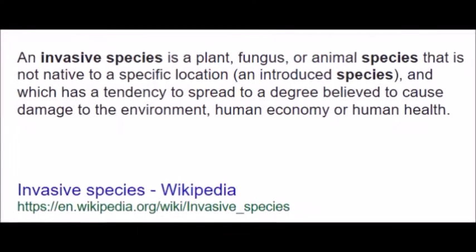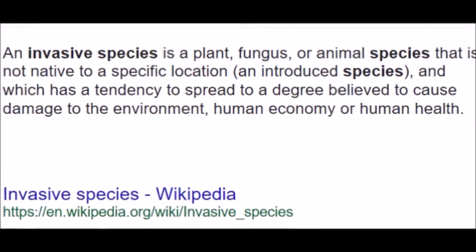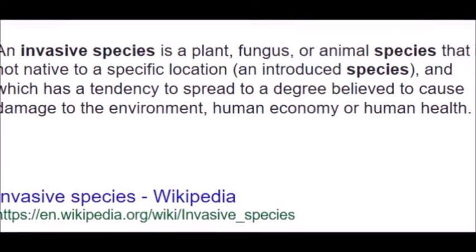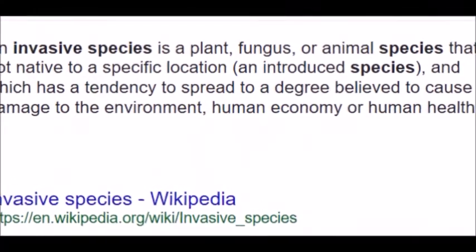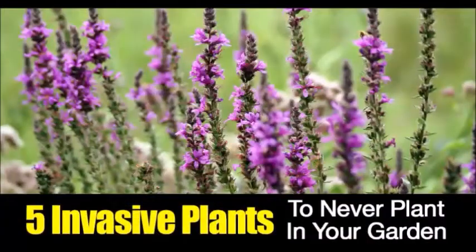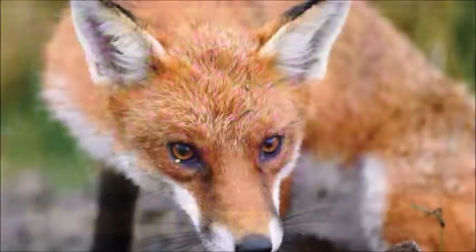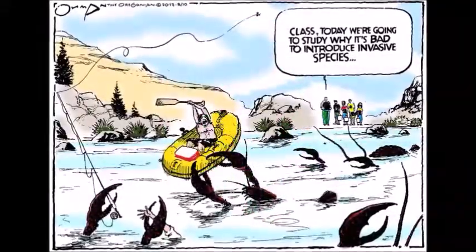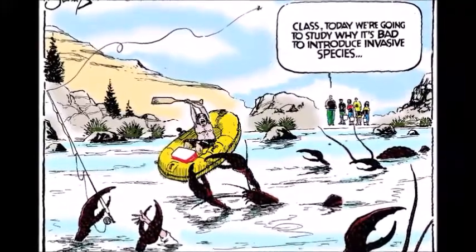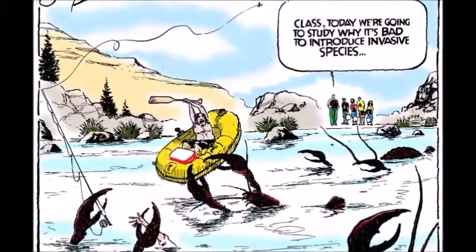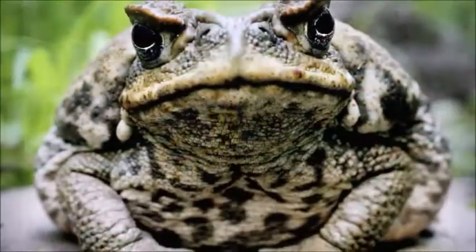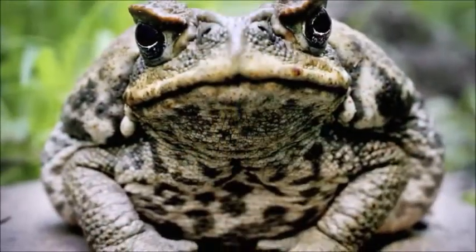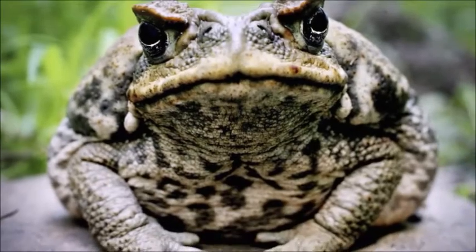To get started, let's first cover what an invasive species is. Invasive species can be plants, animals, or pathogens that are non-native to an ecosystem and, if brought in, can cause extreme harm to the environment. This is exactly what happened in Australia when the cane toads were introduced.